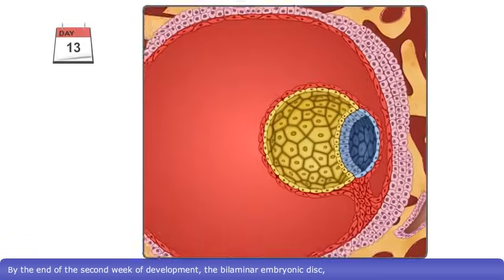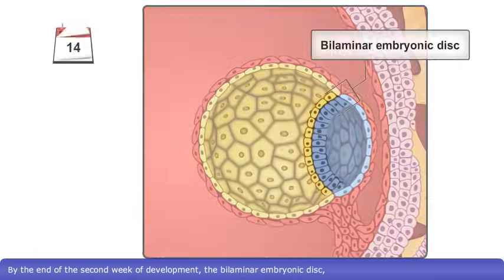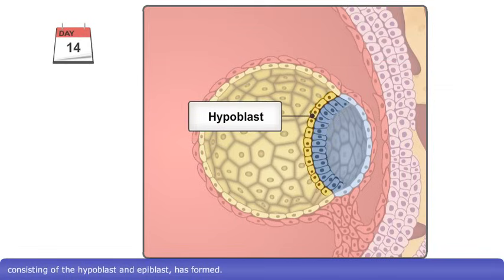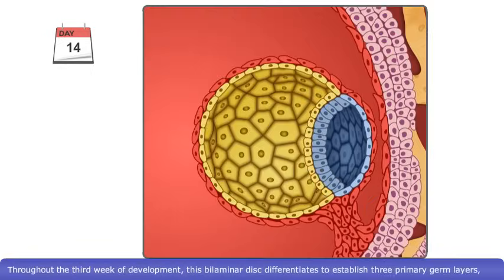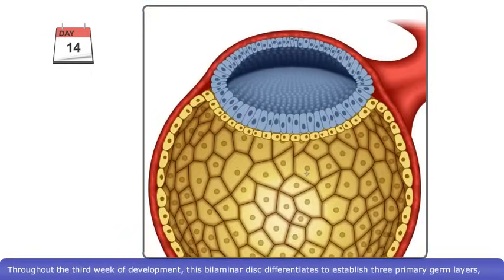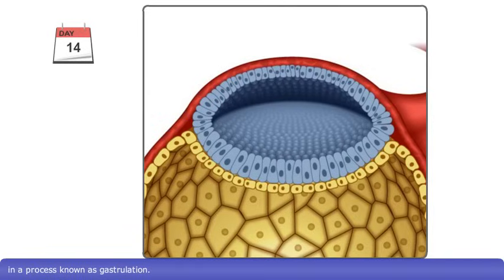By the end of the second week of development, the bilaminar embryonic disc, consisting of the hypoblast and epiblast, has formed. Throughout the third week of development, this bilaminar disc differentiates to establish three primary germ layers, in a process known as gastrulation.